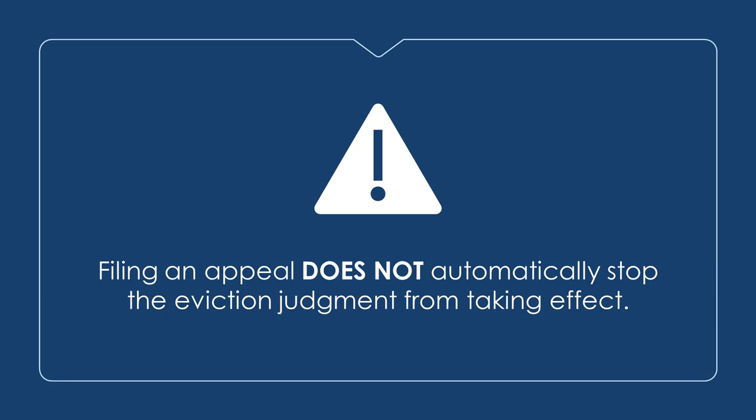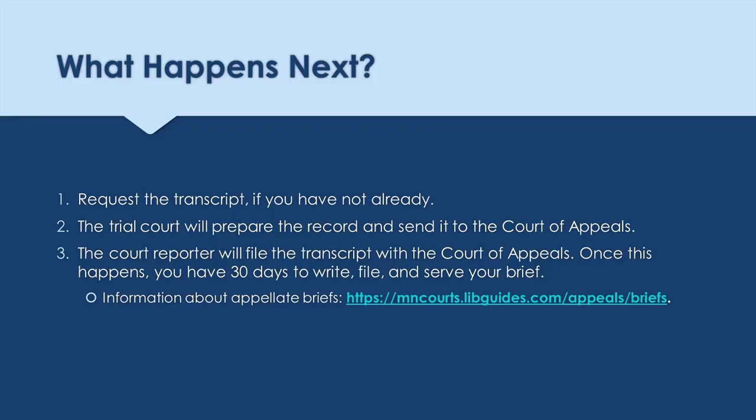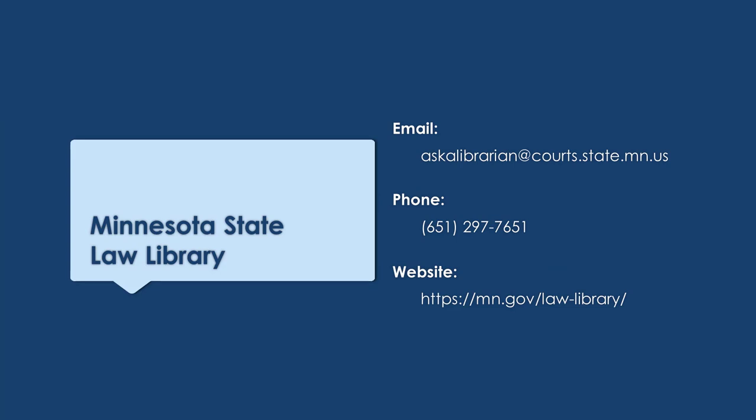You can also contact the Minnesota State Law Library for additional help finding forms and examples. Your next step is to request the transcript if you have not done so already — contact the judge's court reporter to start the process. If you are not sure who the court reporter was, contact court administration in the county where the hearing took place. You will need to work with the court reporter to complete a transcript certificate. Once the court reporter files the transcript, the clock starts running on your time to write your appellate brief. You can find information on appellate briefs by visiting our appeals guide and watching the video Informal Appellate Briefs. Thank you for watching. You can contact the Minnesota State Law Library by emailing Ask a Librarian at courts.state.mn.us or by phone at 651-297-7651.